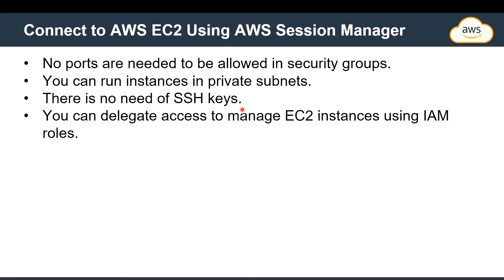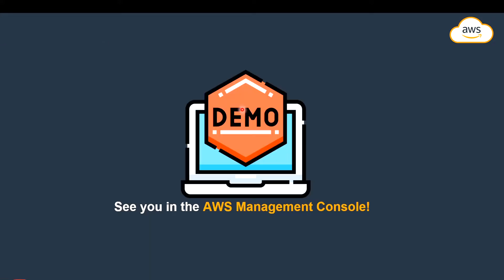There are some AMIs provided by Amazon that already have SSM installed. If you want to enable this on an instance that doesn't have it, the first time you can log in using SSH, install SSM, add the IAM policy, and then remove the SSH rule from your security group. That's how you can secure your EC2 instance.